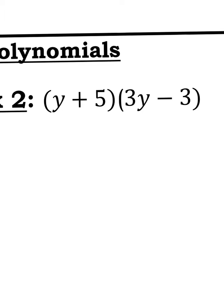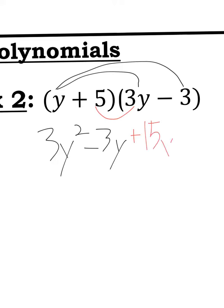Example 2, we got two binomials here. So you're going to do y times 3y. So that'll give me 3y squared. And then y times negative 3 is negative 3y. Let me try and fix this y real quick. Getting a little distracted. So y times negative 3 is negative 3y. And then I'm going to do 5 times 3y. So that's 15y. And then 5 times negative 3 is negative 15.